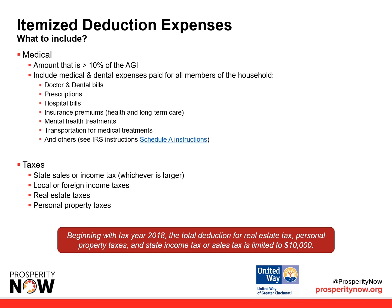You can also cover taxes: state sales or income taxes (whichever is larger), local or foreign income taxes, real estate taxes, or personal property taxes. Beginning with tax year 2018, the total deduction for real estate tax, personal property taxes, and state income taxes or sales tax is limited to $10,000.